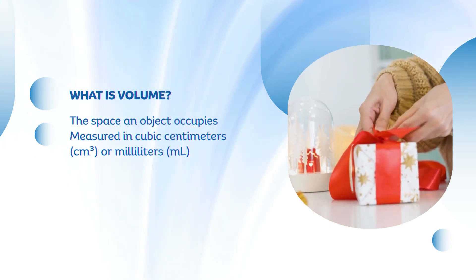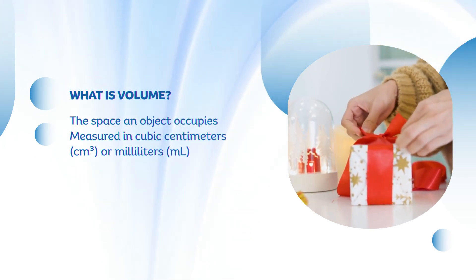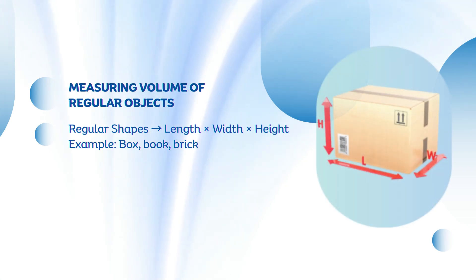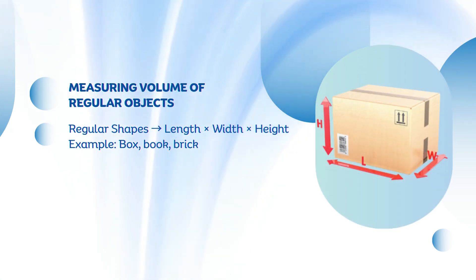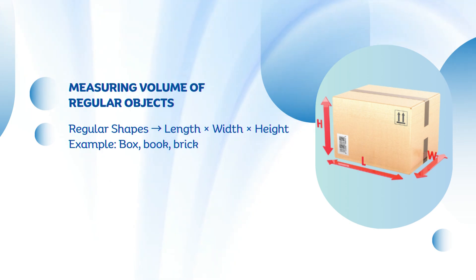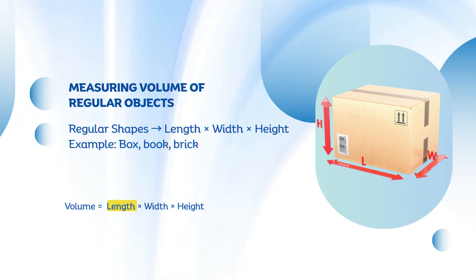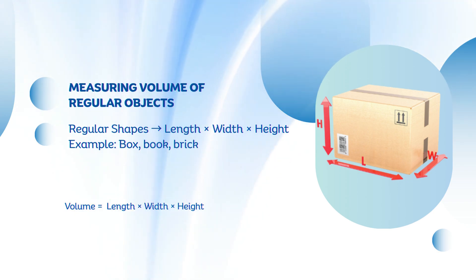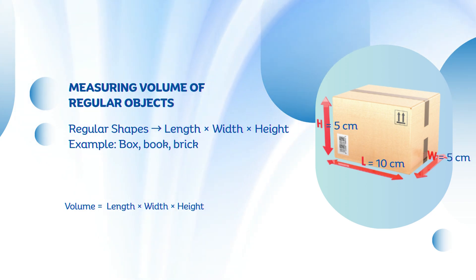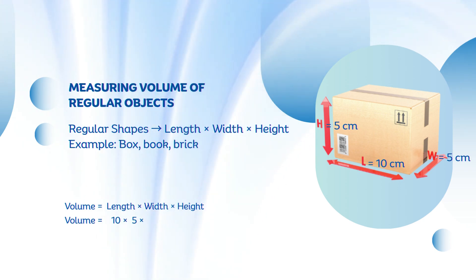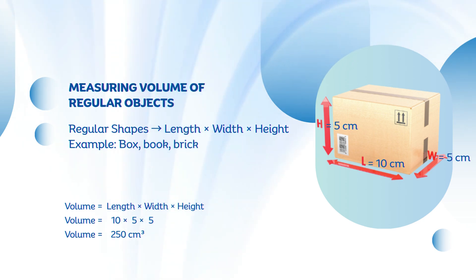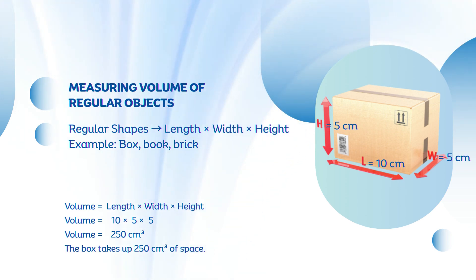Let's look at how to measure the volume of both regular and irregular shapes. For regular objects like cubes, boxes, or rectangular blocks, we can measure each side using a ruler, then multiply length times width times height to find the total volume. For example, if a box is 10 cm long, 5 cm wide, and 5 cm tall, 10 times 5 times 5 equals 250 cm³ — meaning the box takes up 250 cm³ of space.